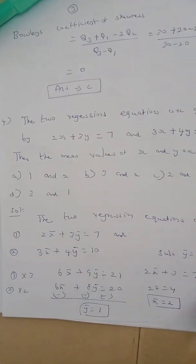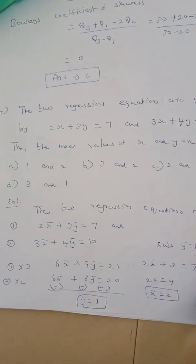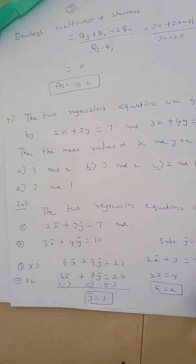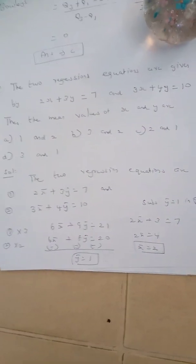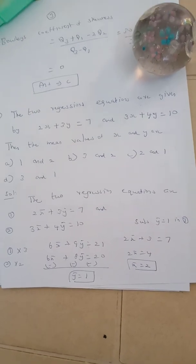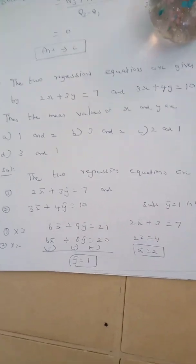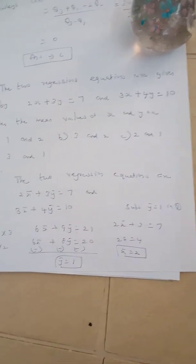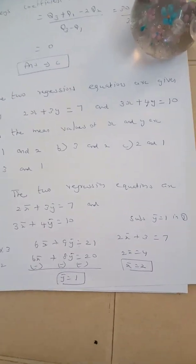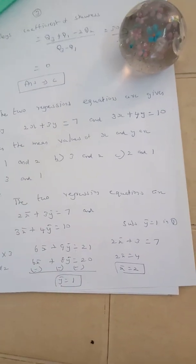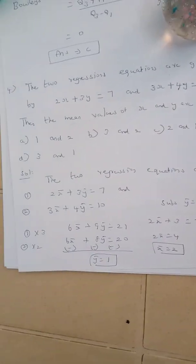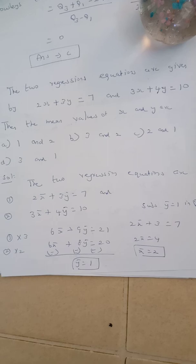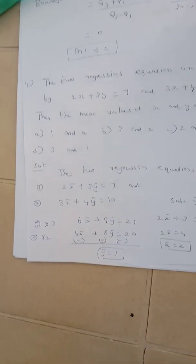Question number 4. The two regression equations are given by 2X plus 3Y equal to 7 and 3X plus 4Y equal to 10. Then the mean values of X and Y are. Since the regression equations pass through X̄ and Ȳ, we substitute: 2X̄ plus 3Ȳ equal to 7 and 3X̄ plus 4Ȳ equal to 10. Solving the two equations, the mean value of X is equal to 2 and mean value of Y is equal to 1. The correct answer is option C.